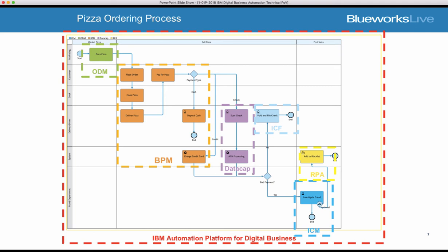IBM has a product called IBM Data Cap that uses Optical Character Recognition, OCR. It can actually scan the image of the check, detect the characters and the numbers — the routing number, the check number, the payment amount — and then automatically process it. That gives you another level of automation for this scenario.